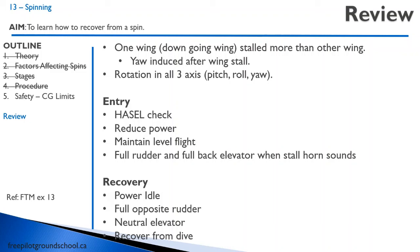Let's review. In a spin, one wing — the down-going wing — is stalled more than the other. Yaw is induced after the wing stalls, and there is rotation in all three axes. To enter: do a HAZEL check, reduce power to idle, attempt to maintain level flight by pulling back on the elevator, and apply full rudder and full back elevator when the stall horn sounds. To recover: power idle, full opposite rudder, neutralize elevator, and recover from the dive.